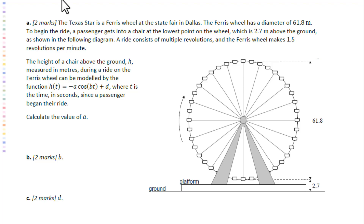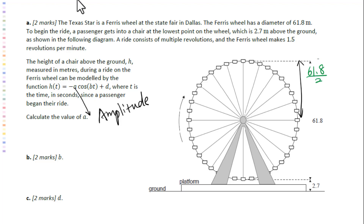From the given information, we know a is positive. A is amplitude. The diameter of the ferris wheel is 61.8, so the radius is 61.8 divided by 2, equals 30.9 meters. The amplitude means the distance from the maximum point to the midline, which is the radius. So a equals 30.9.